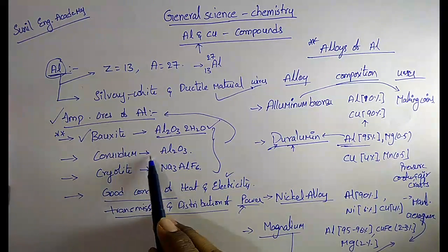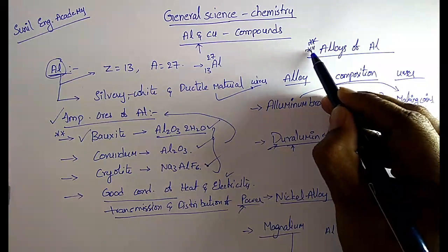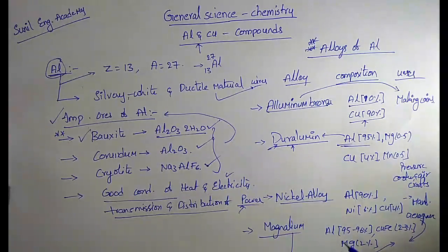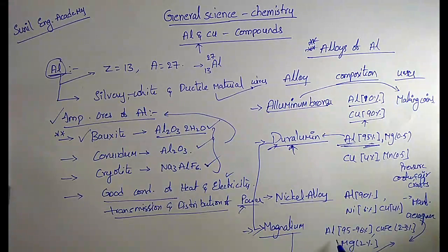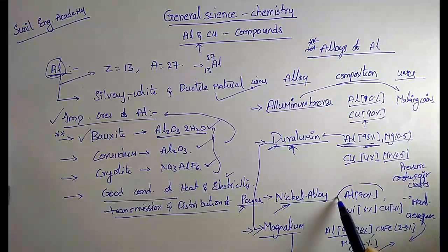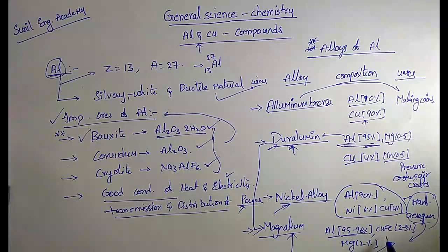To recap, the ores of aluminium are bauxite (Al2O3·2H2O), corundum (Al2O3), and cryolite (Na3AlF6). In aluminium bronze, aluminium is 10% and copper is 90%. In duralumin and magnalium, aluminium is 95%, with copper 4% and magnesium 0.5%. In nickel alloy — aluminium, nickel, and copper — it is used for aerospace. In magnalium, aluminium is 95 to 96%, copper-iron mixture 2 to 3%, and magnesium 2%.